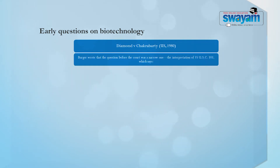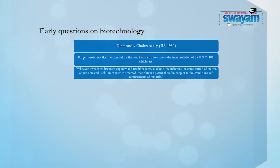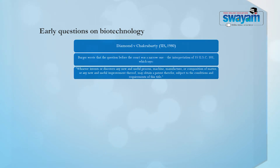Justice Berger wrote the decision and the question before the court was a very narrow one: what interpretation must be given to patentable subject matter as it appears in 35 U.S.C. 101, which says, whoever invents or discovers any new and useful purpose, machine, manufacture or composition of matter or any new and useful improvement thereof may obtain a patent therefore, subject to the conditions and requirements of this title. The question was whether a genetically modified organism as invented by Ananda Chakraborty would fall under a machine, a manufacture, a composition of matter or any useful improvement thereof.